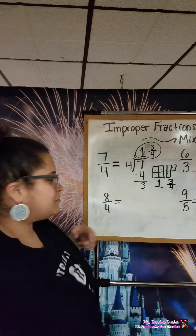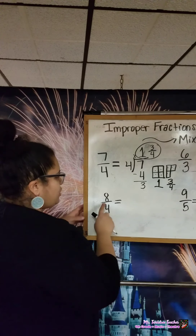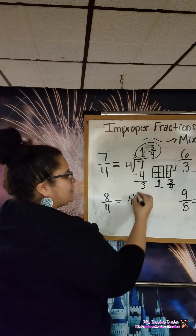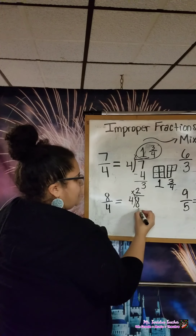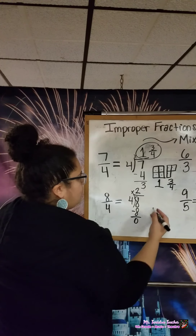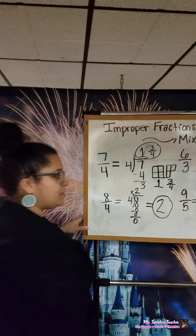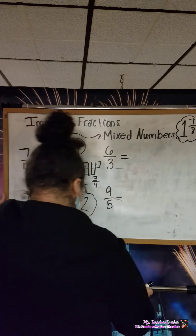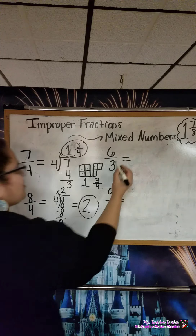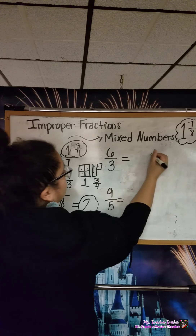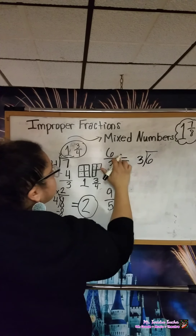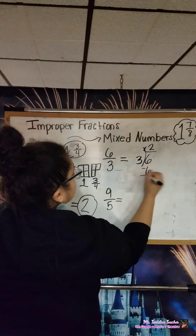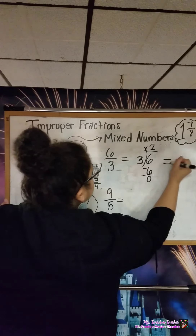Let's go ahead and do another one. Here we have 8 over 4, or 8 fourths. Treat the fraction bar as a division problem. 8 divided by 4 — we know 4 goes into 8 evenly 2 times. 2 times 4 is 8, subtract, we get 0. So 8 fourths equals 2, which is a whole number. Next, 6 thirds, or 6 over 3. 6 divided by 3 — 3 goes into 6 evenly 2 times. 2 times 3 is 6, subtract, we get 0. So 6 thirds equals 2.